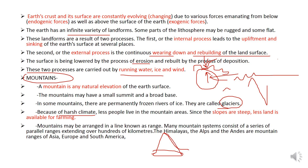Since the slopes are steep, less land is available for farming, but mountains have a wide variety of flora and fauna. Mountains may be arranged in a line known as a range. Many mountain systems consist of a series of parallel ranges extending over hundreds of kilometers. The Himalayas in Asia, the Alps in Europe, and the Andes in South America are examples of mountain ranges.